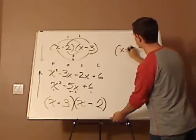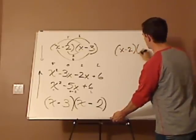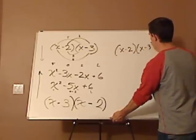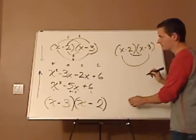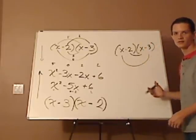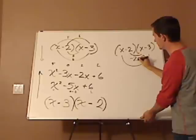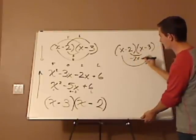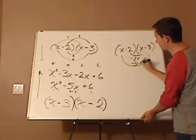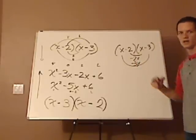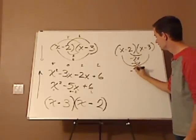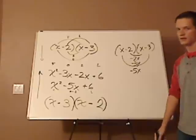So you have x minus 2, x minus 3, the inner and the outer, right? The nose and the smile foil. You have negative 2 times x, which is negative 2x. And then the outer would be negative 3x. And when you add those together, that gives your middle term negative 5x.